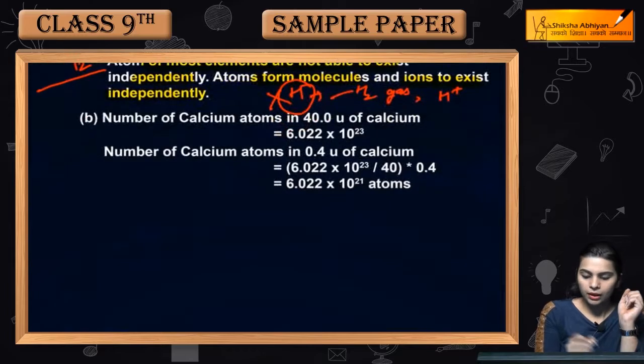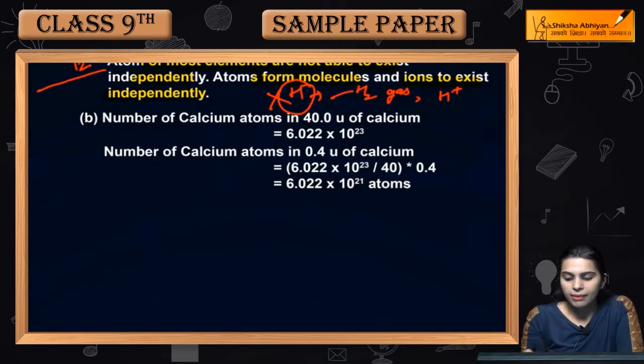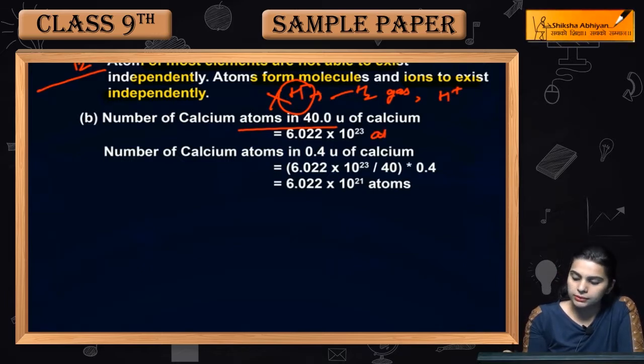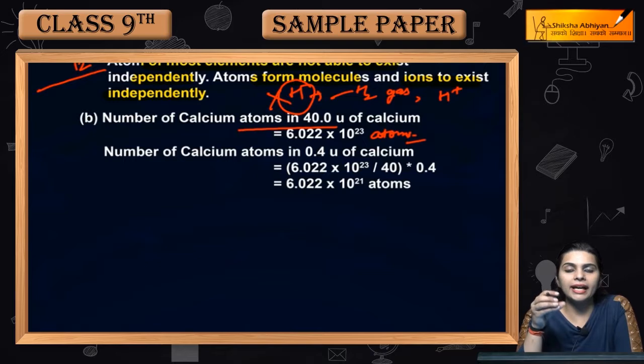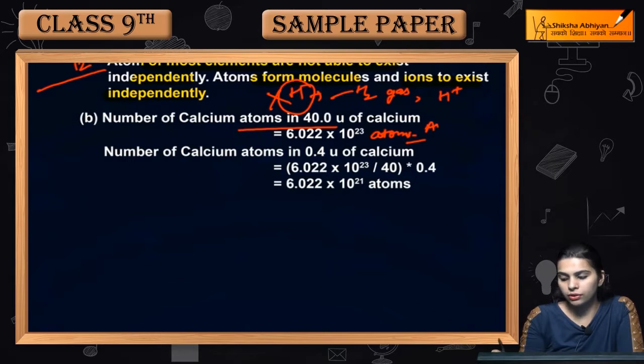So let's talk about number of calcium atoms in 40u of calcium is 6.022 into 10 raised to the power 23 atoms. We all know that when any atom or element of atomic mass is equal, how many atoms in it are equal to Avogadro number. Avogadro number is 6.022 into 10 raised to the power 23.